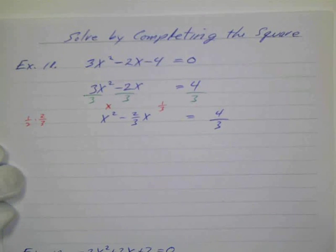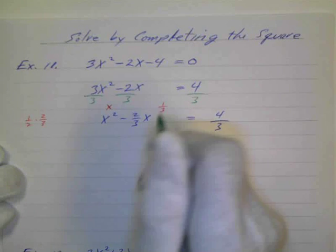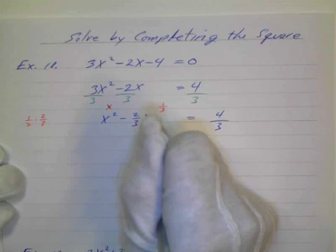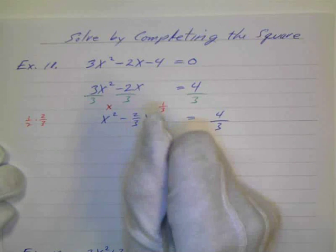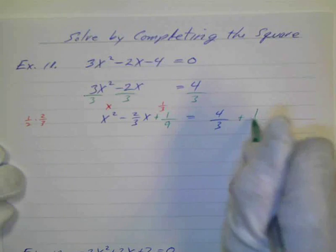That's my little number there, and you can see 2 times 1 third is 2 thirds, so that makes sense, and then I'm going to add this squared, 1 times 1 is 1, 3 times 3 is 9, or 1 third times 1 third is 1 ninth. And that's what I'm going to add to both sides.